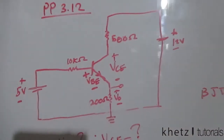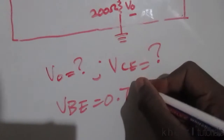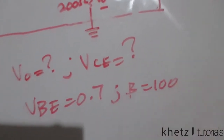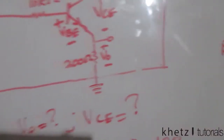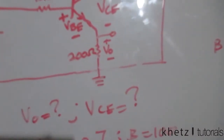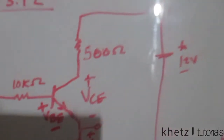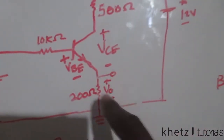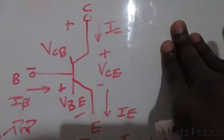The question gives us this transistor circuit with vbe = 0.7 V and beta = 100. We need to find vo and vce. KCL and KVL principles still apply to transistor circuits. The circuit has a 500 ohm resistor, a 12 V source, a 200 ohm resistor, a 10k ohm resistor, and 5 ohms, with vo and vce indicated.